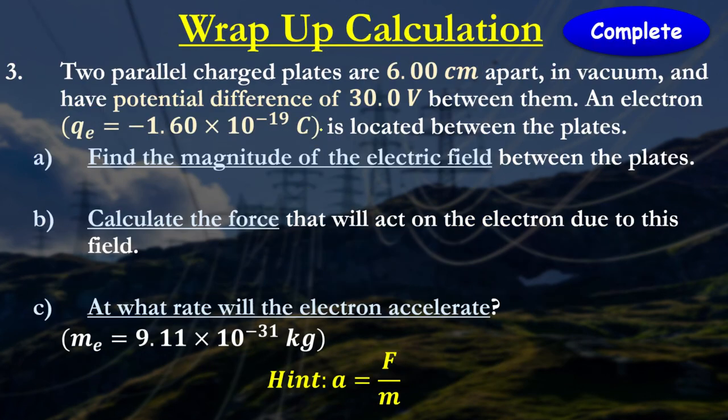Moving on to another set of questions, our wrap-up. It says we have two charge plates that are 6 centimetres apart in a vacuum, has a potential of 30 volts. An electron is located between the plates. We need to find the magnitude of the electric field. So do your conversions, that's 6 times 10 to the minus 2 metres. The magnitude is E equals voltage divided by distance. The voltage is 30, the distance is 6 times 10 to the minus 2. So if I plug that into my calculator, I get 500 newton per coulomb.